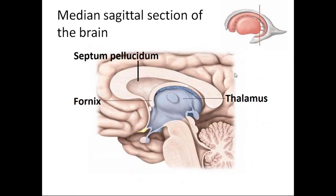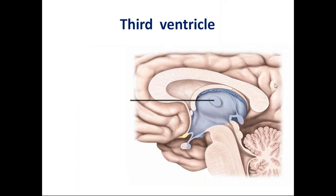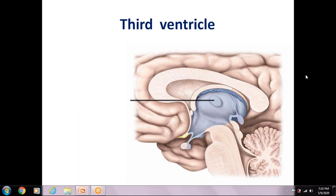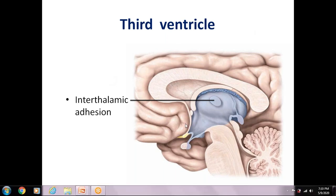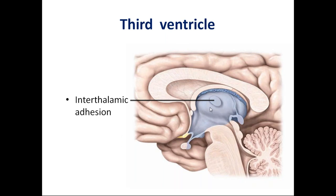Moving to the next picture: the lateral ventricle is inside the septum pellucidum, which attaches the inferior part of the corpus callosum to the fornix and covers the lateral ventricle. You can also see the thalamus — the enlarged part. The elevated part on the thalamus is the interthalamic connection, which connects the two thalami. The third ventricle is the cavity of the diencephalon, while the lateral ventricle is the cavity of the telencephalon.